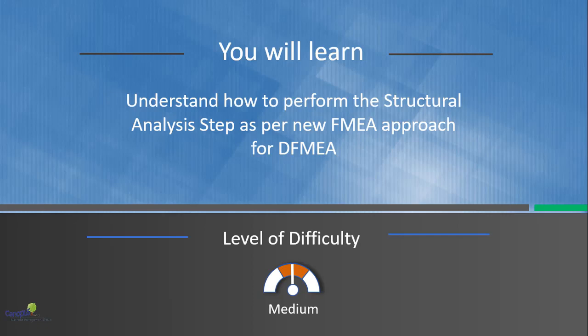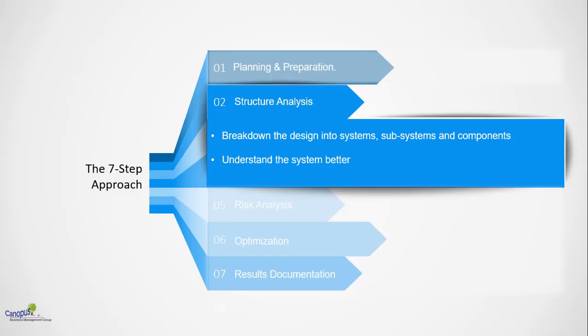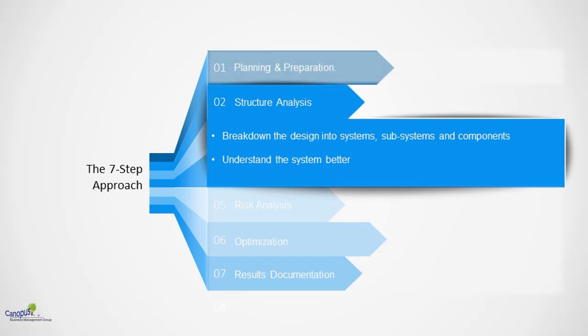In this lecture, we will understand how to perform structural analysis, which is the second step of the new FMEA approach. The structural analysis is mainly meant to break down the entire design into systems, subsystems, and components. This will give us a better understanding of the overall system, and we will be effectively able to identify failures and risks.